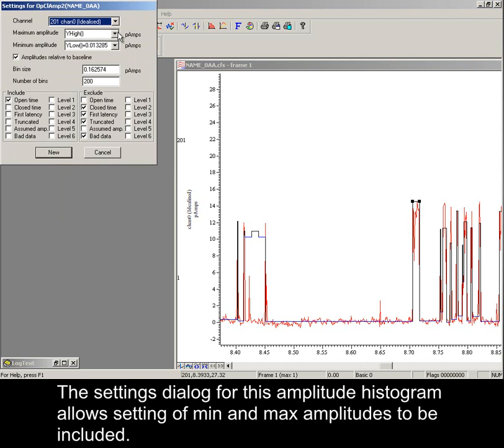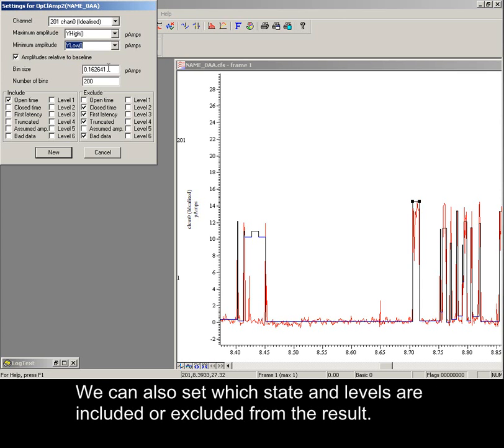The settings dialog for this amplitude histogram allows setting of min and max amplitudes to include. We can also set which state and levels are included or excluded from the result.